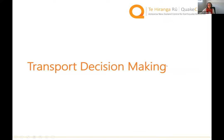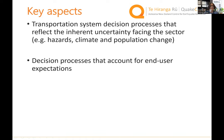Kia ora koutou. My name is Charlotte Brown, I'm joint managing director of Resilient Organizations and co-lead of IP3 alongside Liam. I'm going to talk about the third stream of work: transport decision making processes to help inform how we invest and develop our transportation system, particularly considering the inherent uncertainty facing the sector — from hazards we face and also underlying trends like climate and population change.